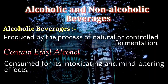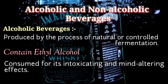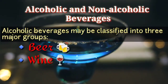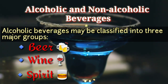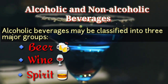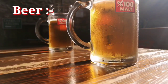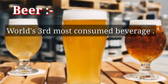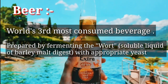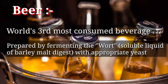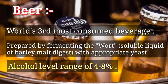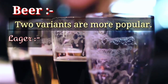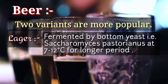On the basis of raw material used and process technology used in their manufacture, alcoholic beverages may be classified into three major groups. Beer is the world's third most consumed beverage. It is prepared by fermenting the water-soluble liquid of malted barley with appropriate yeast to attain an alcohol level in the range of four to eight percent. Two variants are more popular: lager and ale.